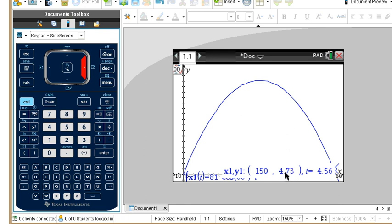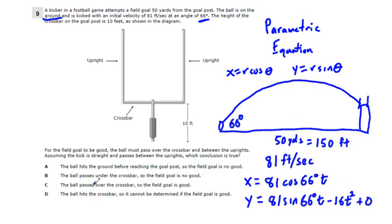So the field goal kick is not going to be good. Now if we increase the velocity or change the angle, we could make the field goal kick good, but it's not going to be good. The ball hits the ground before reaching the goal post - we have four point something feet, so it's not going to hit the ground. The ball passes under the crossbar, so the field goal is no good. Yeah, that's going to be our answer.